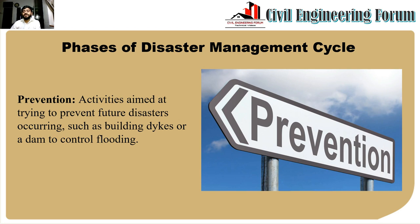Now we talk about the phases of the disaster management cycle. The first phase is prevention — activities aimed at trying to prevent future disasters from occurring, such as building dikes or dams to control flooding. This addresses hazards before they hit victims.